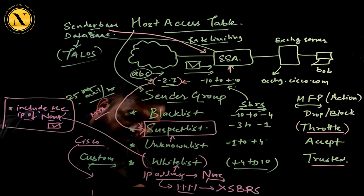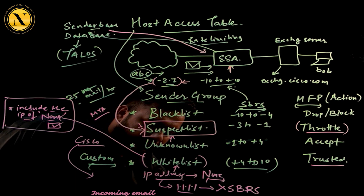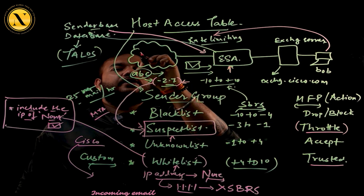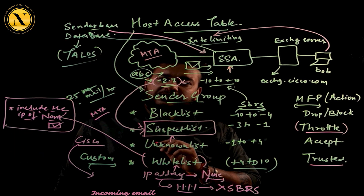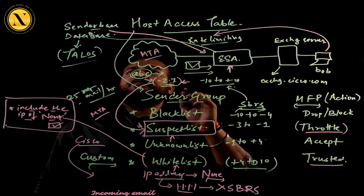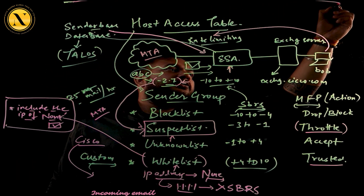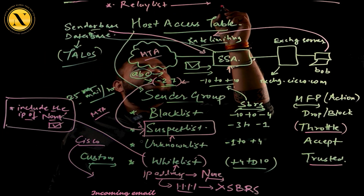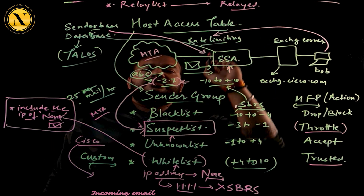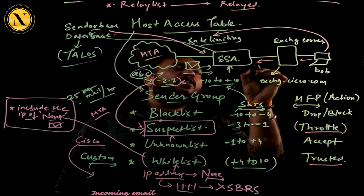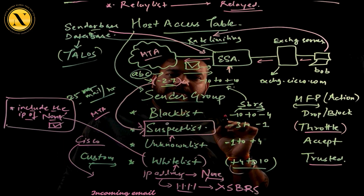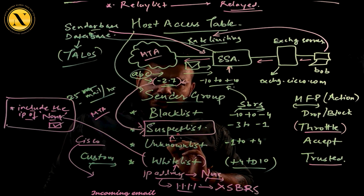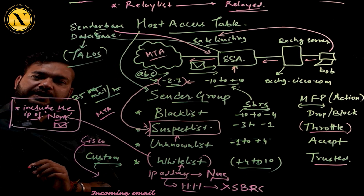So that covers the incoming email scenario. But what about when internal user Bob wants to send an email to the outside world toward a random mail transfer agent? For that, there is another sender group created called the relay list, with a respective mail flow policy called relayed. Whatever email Bob wants to send to the outside world through the ESA, it is directly relayed — no checks or validations needed, just send the email.